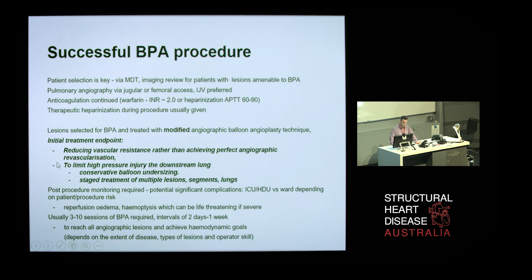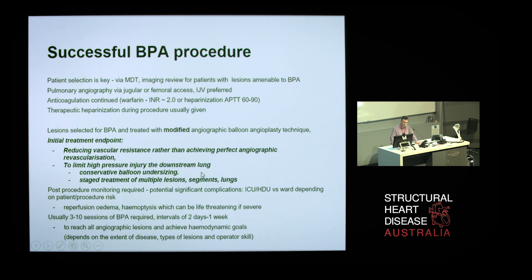This incorporates a change in the end point of the actual intervention. The initial treatment end point is actually just to reduce the vascular resistance rather than achieving a perfect angiographic revascularisation. All interventionalists must resist the oculostenotic reflex — because if you treat with a tiny balloon, it still looks horrible afterwards, but what you can't see is the effect you've had on the peripheral vascular resistance. This also limits high-pressure injury to the downstream lung. We use undersized balloons and stage treatment over multiple lesions, multiple segments, and multiple lungs.